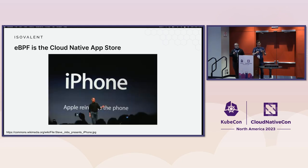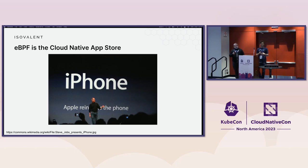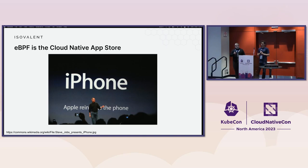Another way to think about this in the cloud-native world: you have your smartphone. Originally, it was just shipped with the applications that the device provider gave you. But with the iPhone and the App Store, suddenly you could download new functionality onto your phone on the fly — something like an app to guide you around a new city, buy metro tickets, or call a taxi. eBPF allows you to do something similar — you're able to add new functionality to a device you already have on the fly. And that's pretty powerful.